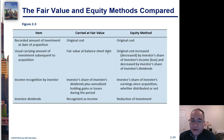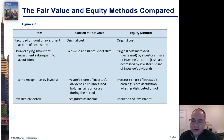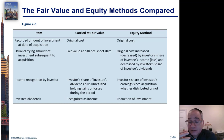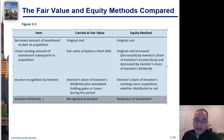Under the equity method, income will be recorded when the investee reports income. You may also record income if you sell a share of the investment and you have a gain. When the investee declares dividends, under the fair value method that's going to be income, but under the equity method that's going to be a reduction of the investment. That is a big difference.